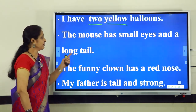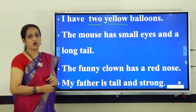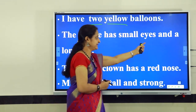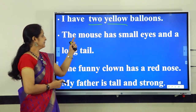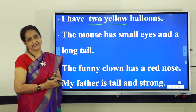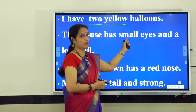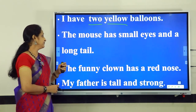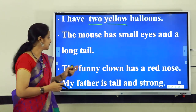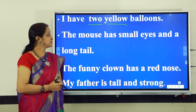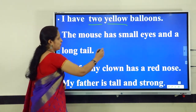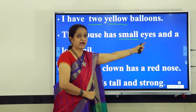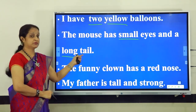The next sentence: The mouse has small eyes and a long tail. Here we have three nouns: mouse, eyes, and tail. We have two describing words in this sentence. The first describing word is small, and that word talks more about the eyes. Then we have the describing word long, that tells us more about the tail of the mouse. Let us underline these two describing words: small and long. Small talks more about the eyes of the mouse, and long tells us more about the tail of the mouse.